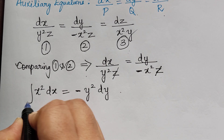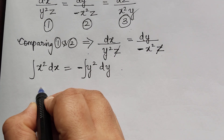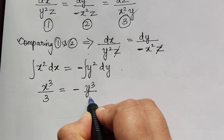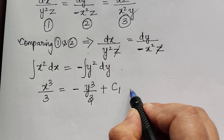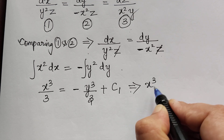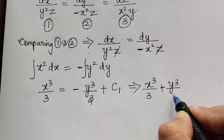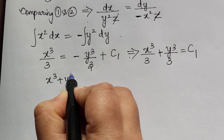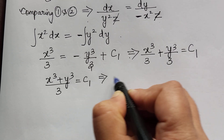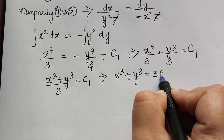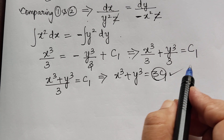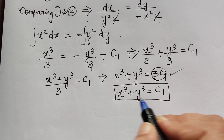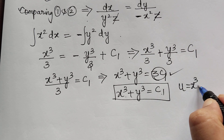Integrating both sides: the integration of x² gives x³/3, and the right-hand side gives −y³/3 plus constant c₁. Bringing −y³/3 to the left gives x³/3 + y³/3 = c₁, which simplifies to x³ + y³ = 3c₁. Since 3c₁ is just a constant, we write x³ + y³ = c₁, so the first solution is u = x³ + y³.